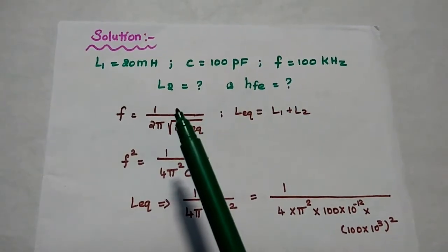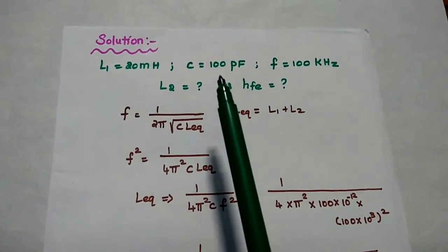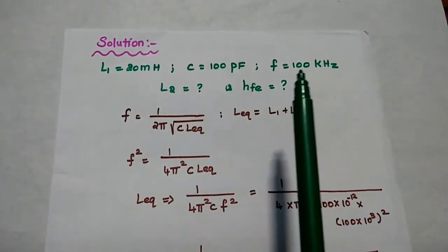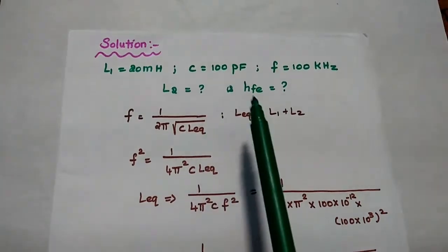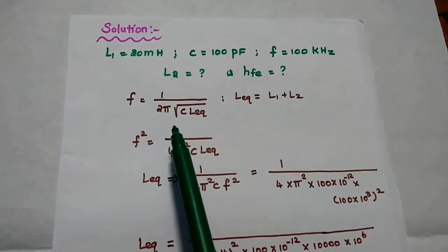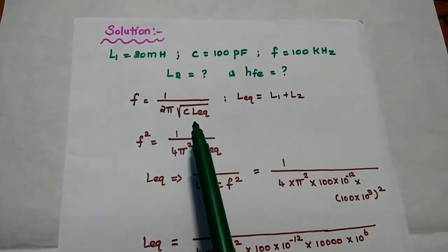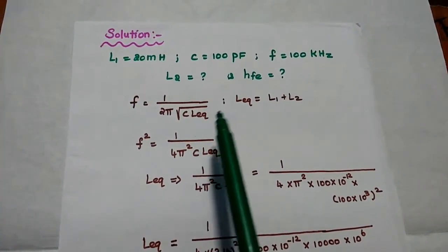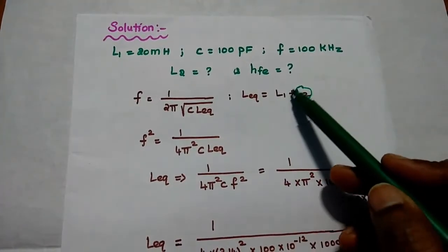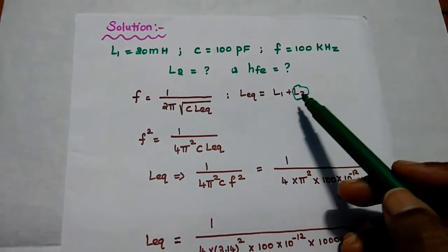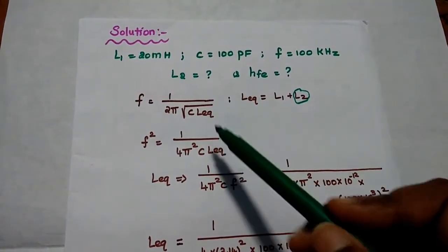In the solution part, the given data are: L1 is equal to 20 millihenry, C is equal to 100 picofarad, F is equal to 100 kilohertz. We are going to find out L2 and H_FE. We have to use the formula F is equal to 1 divided by 2π times the square root of C into L_equivalent, where L_equivalent is equal to L1 plus L2. We need to find the value of L_equivalent from this formula.